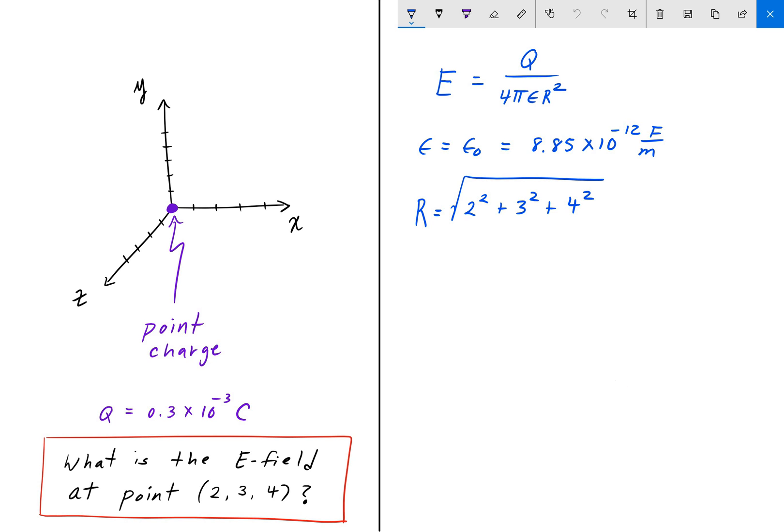Now, if the point charge was not located at the origin, then you would have to take the differences, right? So the distance formula is square root of (x2 - x1) squared plus (y2 - y1) squared plus (z2 - z1) squared. And all of that square root.